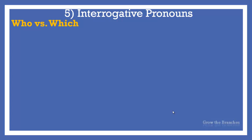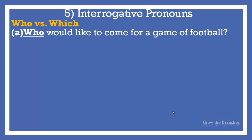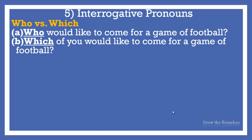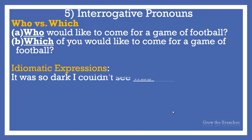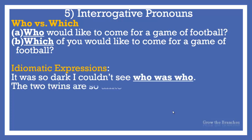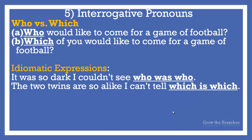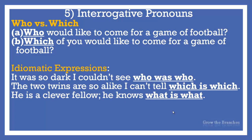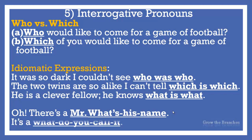Who versus which. Similar to the distinction between what and which when we refer to things, the difference between who and which relates to persons. There is a different implication in each of these two sentences: Who would like to come for a game of football? — Which of you would like to come for a game of football? In sentence A the speaker is prepared to take all who wish to come; in B the speaker is only prepared to take a certain number. Let's see some common idiomatic expressions: It was so dark I couldn't see who was who. The two twins are so alike I can't tell which is which. He is a clever fellow — he knows what is what. And when you cannot remember the name: Oh! There is a Mr. What's his name? It's — what do you call it?